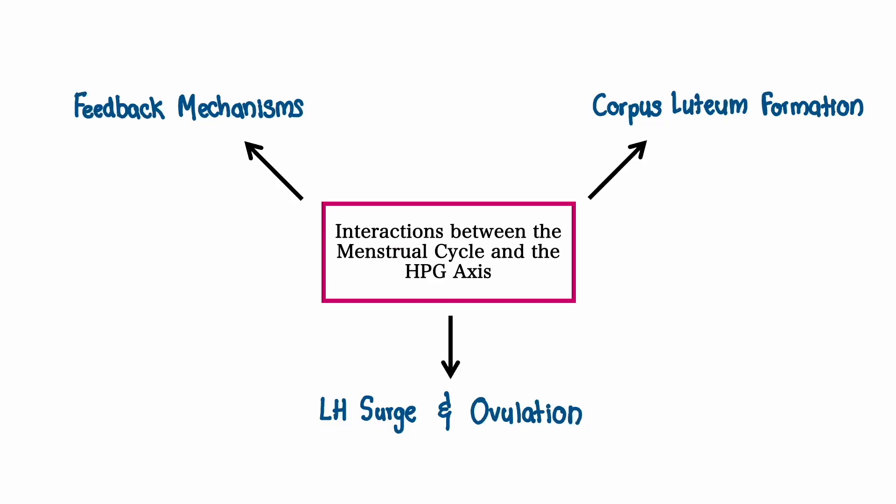Now let's consider the interactions between the menstrual cycle and the HPG axis. Specifically, let's consider the feedback mechanisms, corpus luteum formation, and the LH surge and ovulation.